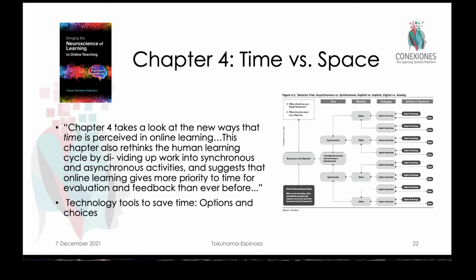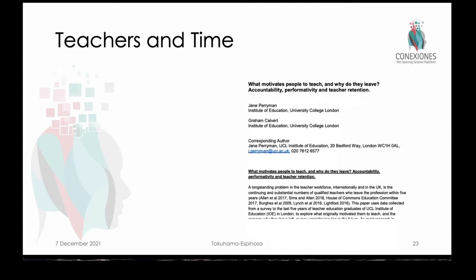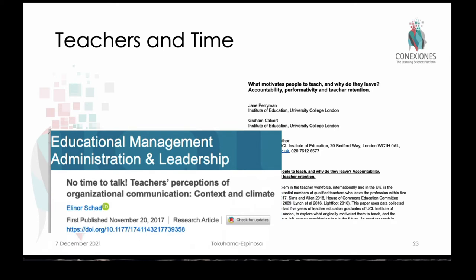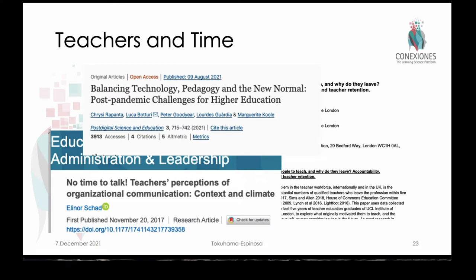Part of this is about designing a learning environment and leveraging technology where you can allow people to fill in gaps in their prerequisite knowledge to advance towards your objectives. This is precisely chapter four in my book, 'Bringing the Neuroscience of Learning to Online Teaching' — the question of time and space. How has time been changed by putting people online through the COVID experience? Technology can actually save us a lot of time, but we have to know what's out there. When you ask teachers about time, they never have enough of it. Teachers work probably 60 hours a week around the world.